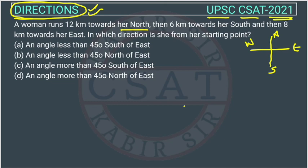She is going this side, so this side is north. This is 12 km towards her north. Then, 6 km from here, again going towards her south. South will be downward, so going again towards south — 6 km. This is 6 km towards south.